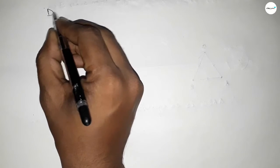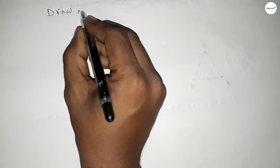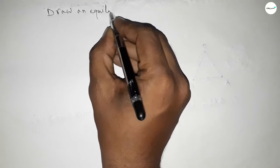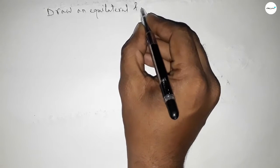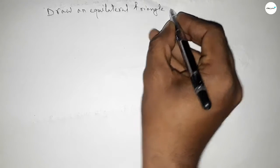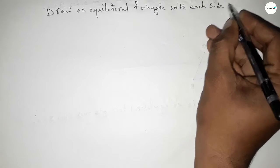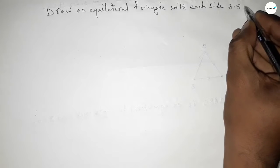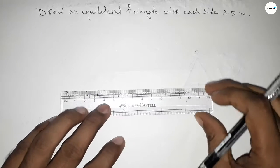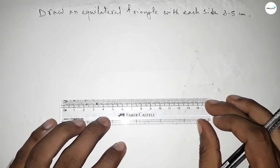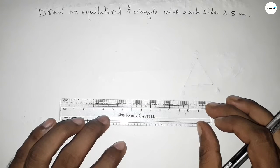Hi everyone, welcome to SSR classes. Today in this video we have to draw an equilateral triangle with each side 3.5 centimeter. So let's start the video. First of all we have to draw a line of 3.5 centimeter.